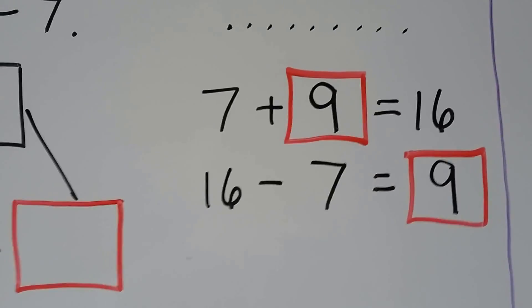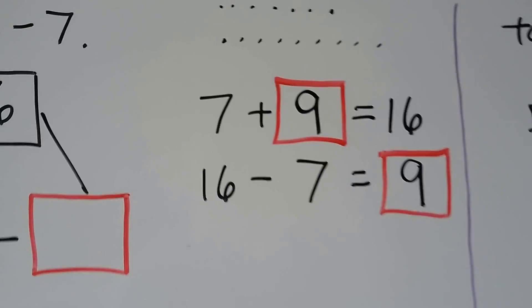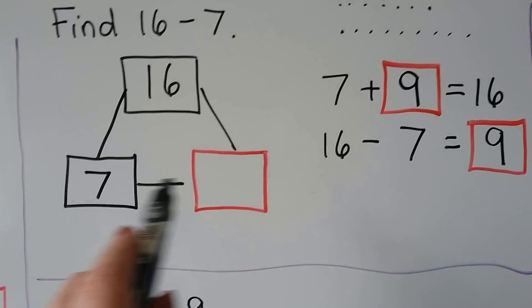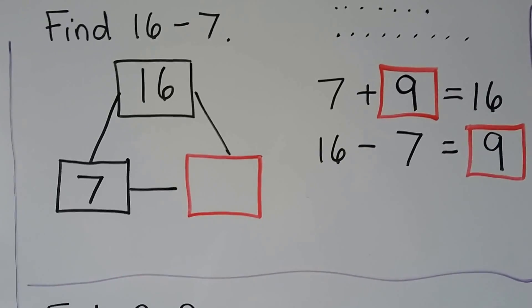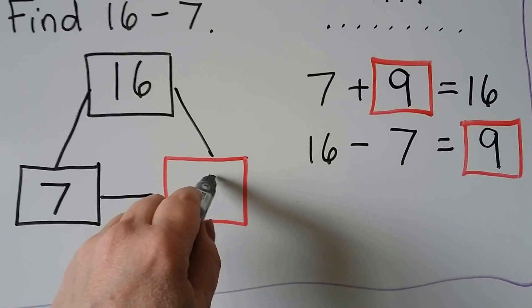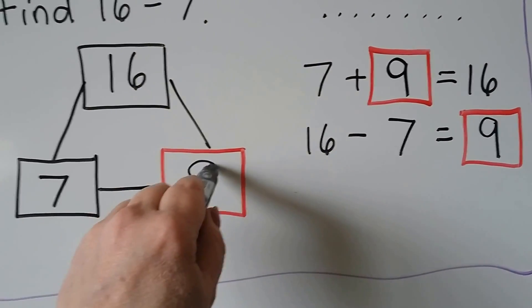The related facts use the same numbers in a different order. That means the missing unknown number here is a 9.